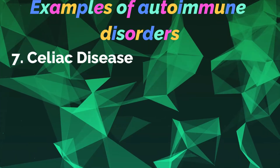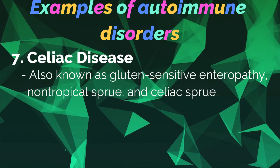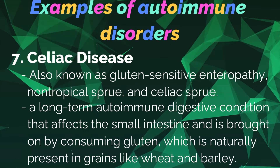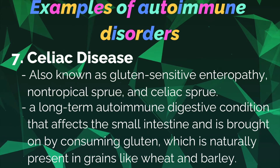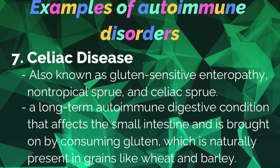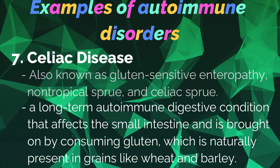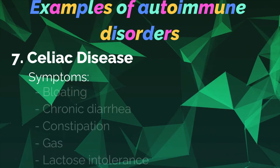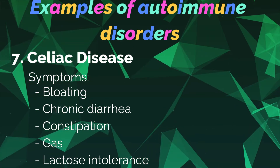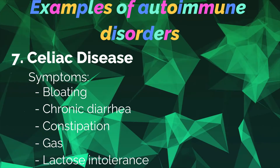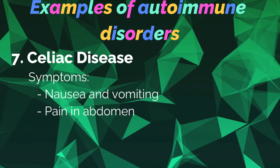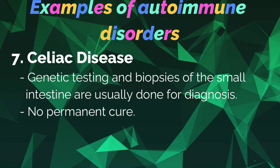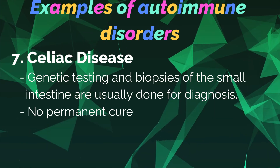Number seven: Celiac disease. It is also known as gluten-sensitive enteropathy, non-tropical sprue, and celiac sprue — a long-term autoimmune digestive condition that affects the small intestine and is brought on by consuming gluten, which is naturally present in grains like wheat and barley. About 1% of the world's population has this condition. Symptoms include bloating, chronic diarrhea, constipation, gas, lactose intolerance, nausea and vomiting, and abdominal pain. Genetic testing and biopsies of the small intestine are usually done for diagnosis and there is no permanent cure.